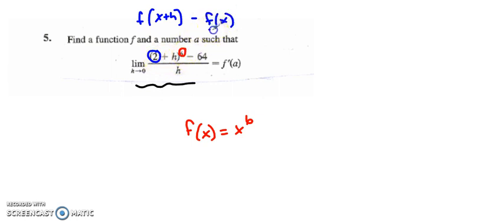And then just check to see if f of 2 is equal to 64, and in fact 2 to the sixth equals 64, so the function must be x to the sixth.